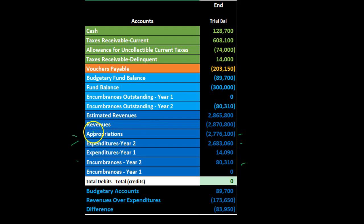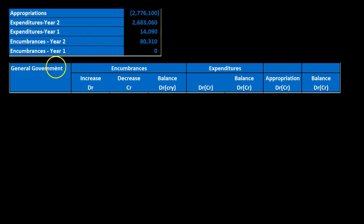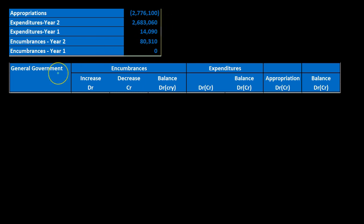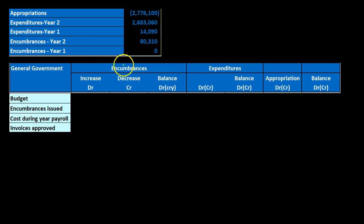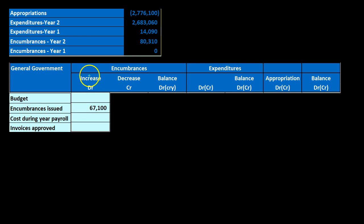The trial balance portion we are considering includes appropriations, encumbrances, and expenditures, broken out by category for governmental-type activities. We're going to say this was the budget, then encumbrances issued, cost during the year, and invoices approved. Encumbrances increase with a debit because that's their normal balance. Remember that encumbrances are not expenditures — they're holding accounts that will be in place until the expenditure has happened or been incurred.